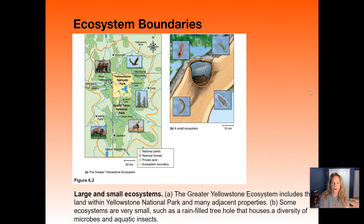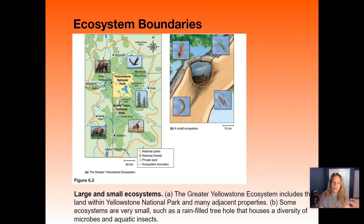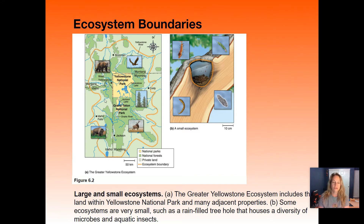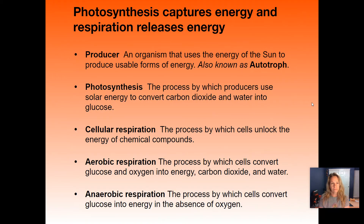Ecosystems can be large, huge areas. For example, in the picture on the left you've got all of Yellowstone Park — all the boundaries within Yellowstone Park make up that ecosystem, spanning parts of two different states. Or we could be talking about a small ecosystem, like a nook in a tree where a bunch of different organisms are living. There could be hundreds or thousands of these small ecosystems living within a larger one, and the small ones are just as important as the large ones.